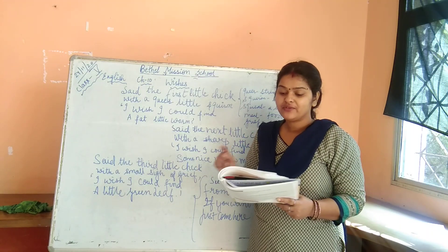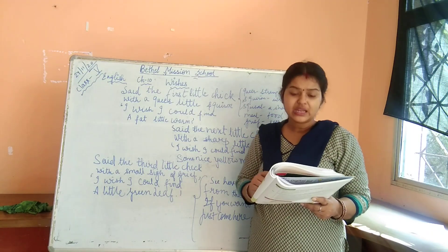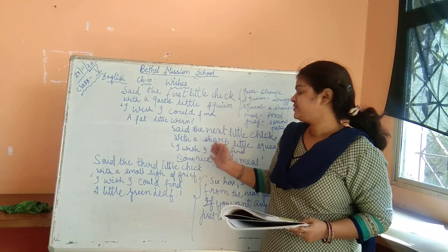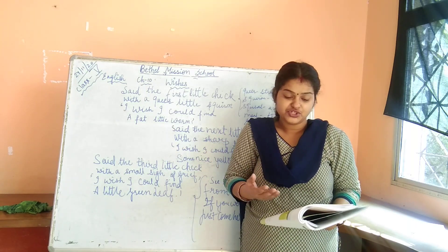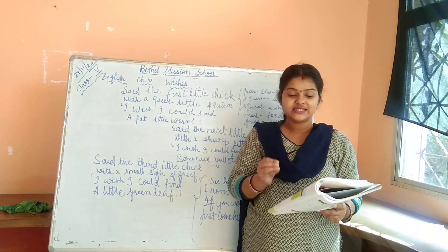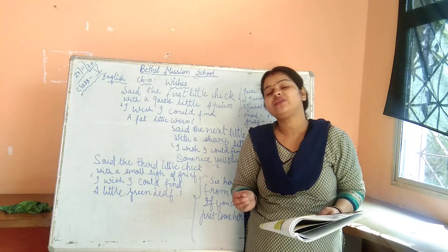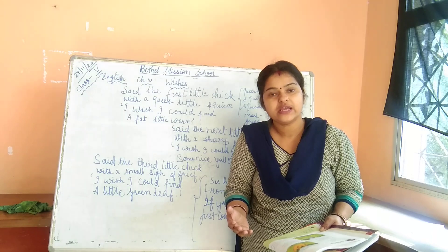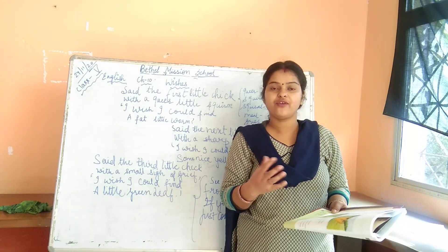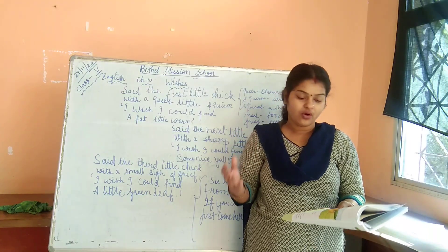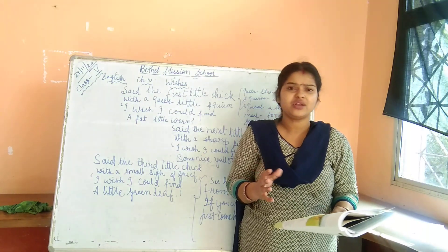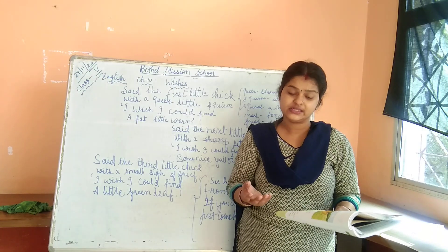The next little chick with a sharp little squirm — meaning the second chick — she was also having hope and wishes: 'I wish I could find some nice yellow meal.' They were in a search of food. So this second chick was having a wish and a sharp cry that she could have a worm to eat.